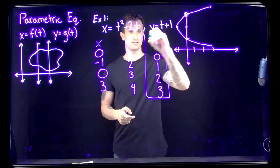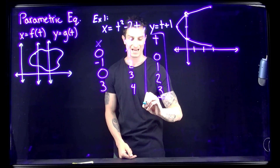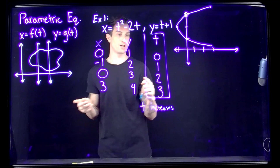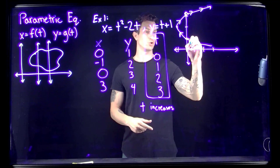That takes care of the x and y's, but let's not forget about t. The t's tell us direction — arrows showing what's happening as t increases. So starting at t=0 we're at (0,1), then we go to (−1,2), meaning we're traveling in that direction. The t gives us the extra element of knowing the direction we are traveling.